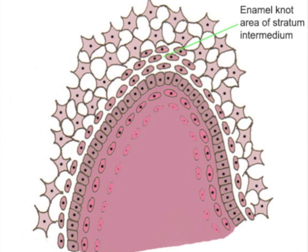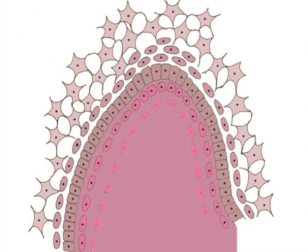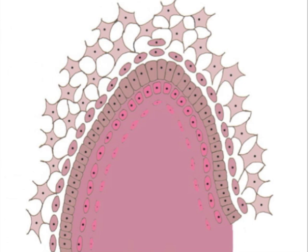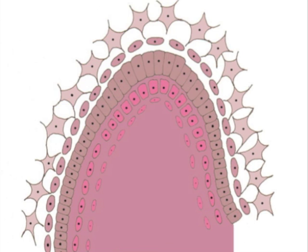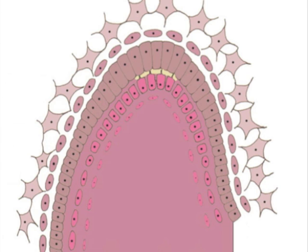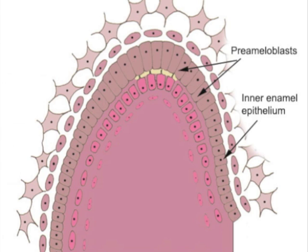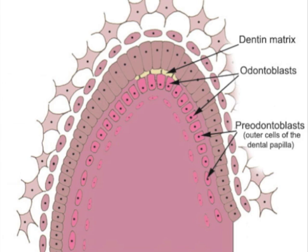The enamel knot area signals changes to begin apposition. The inner enamel epithelial cells at the future incisal edge elongate and differentiate into pre-ameloblasts. This change induces the pre-odontoblasts to elongate and differentiate into odontoblasts that produce dentin matrix or pre-dentin. Note the elongated pre-ameloblasts differentiated from the inner enamel epithelium and the elongated odontoblasts differentiated from pre-odontoblasts that produce dentin matrix.